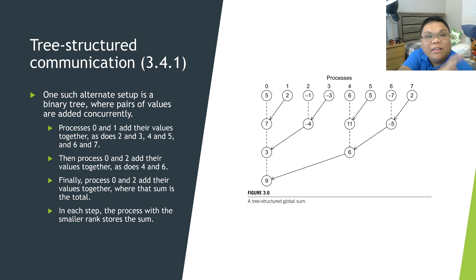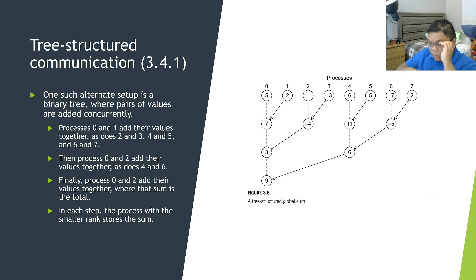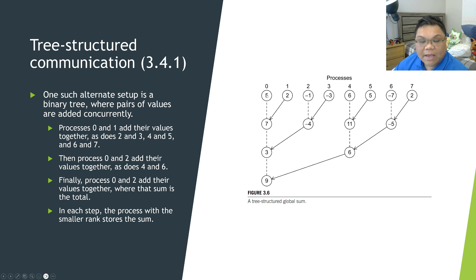How we wrote it in the example program, we basically have processes 1 through 7 sending all their values to process 0. Instead, we want all of these processes and their values in a tree structure. Process 0 receives a message from process 1; process 1 sends to process 0, so process 0 contains the sum of those two values. Processes 2 and 3 do the same, processes 4 and 5 do the same, and processes 6 and 7 do the same.